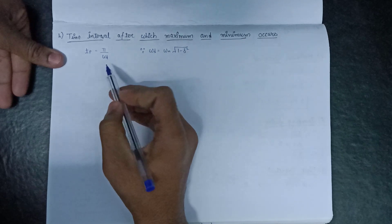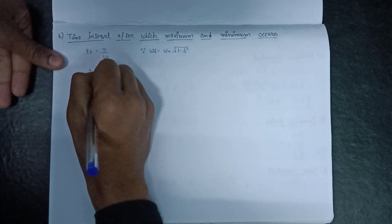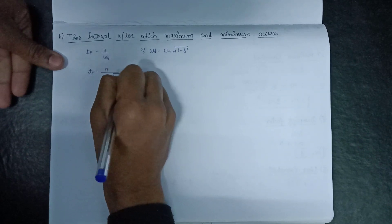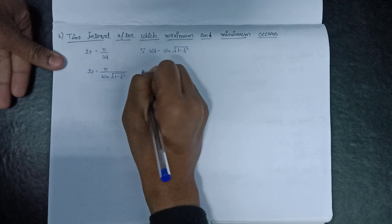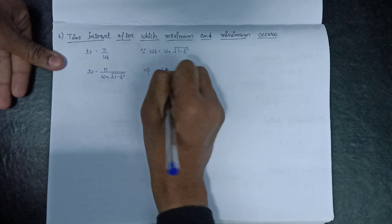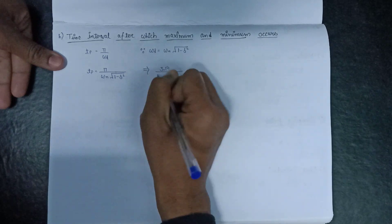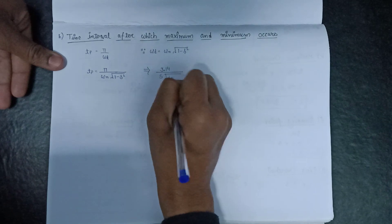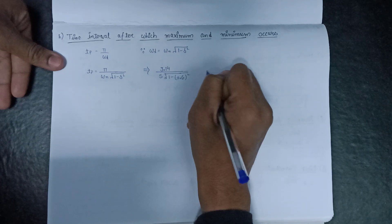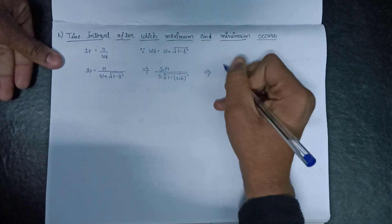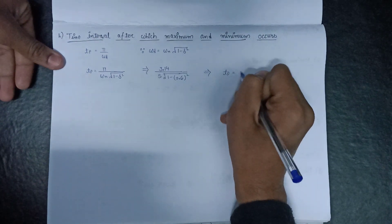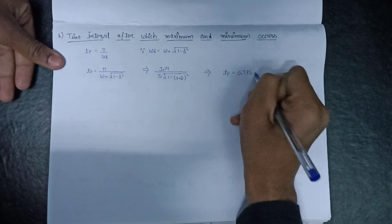Substituting ωd into the expression: tp = π / (ωn × √(1−δ²)) = 3.14 / (5 × √(1−0.6²)). On evaluating, the peak time tp = 0.785 seconds.